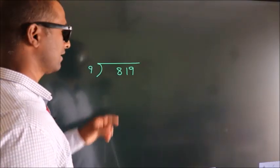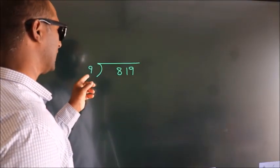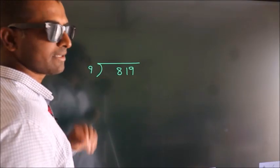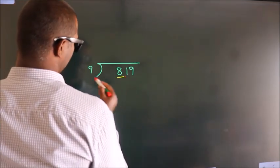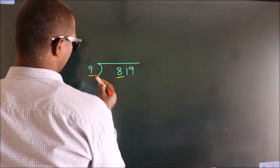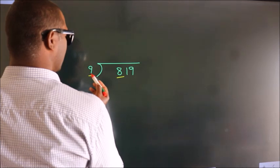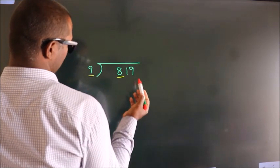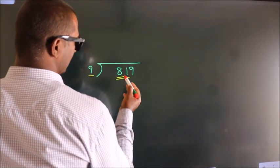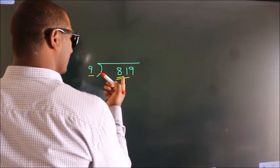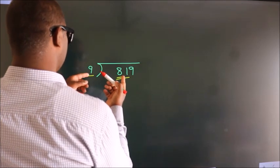How to divide 819 by 9. Here we have 8, then 9. Since 8 is smaller than 9, we should take two numbers: 81. When do we get 81 in the 9 times table?